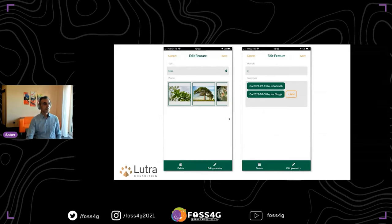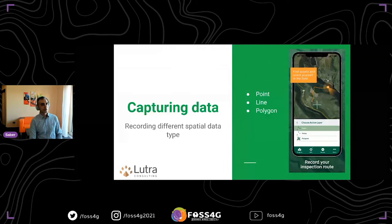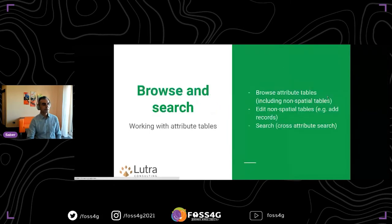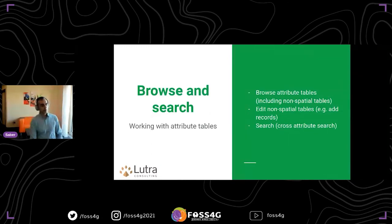You can also have relations — for example, attaching multiple photos to a single feature, or if you have multiple inspections for, say, a manhole, you can attach that inspection to the same single point or geometry. You can capture all sorts of geometries: line, point, polygon. If you are capturing line or polygon, you can use GPS streaming as you walk to convert the GPS stream to a line or polygon. It's not only for spatial data — you can also work with non-spatial data like attribute forms and non-spatial tables; you can search and add data to them.